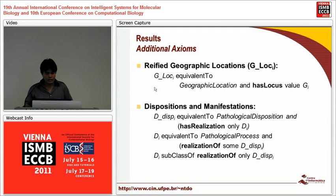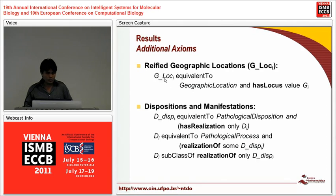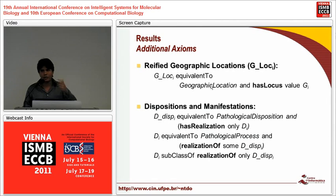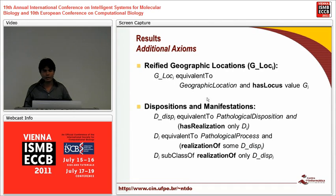The first additional axiom uses reification for geographic locations to maintain reasoning over geographic entities on the T-Box, which is better for computational complexity. GLoc is equivalent to geographic location and has_locus value G1 — meaning, for example, that Brazil location has all entities located in Brazil. We also need another description to define dispositions and manifestations: from when a person has a disposition to the moment they exhibit it as a manifestation, from a disposition to a pathological process.